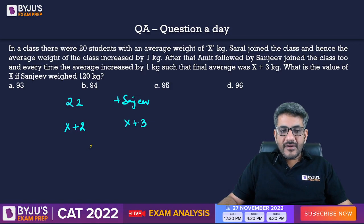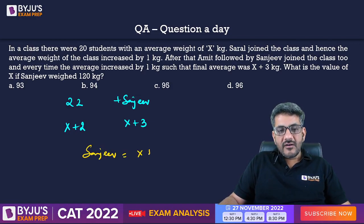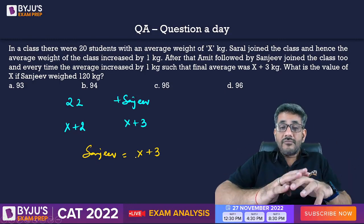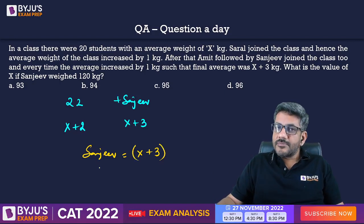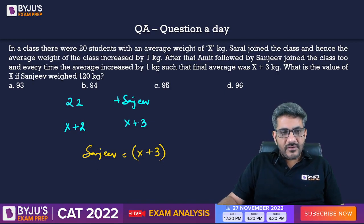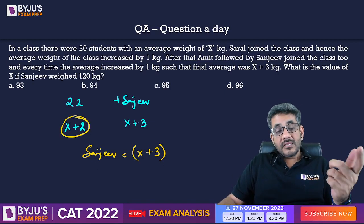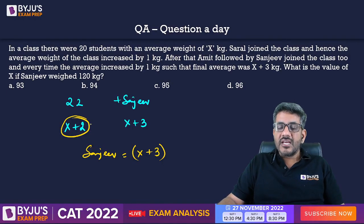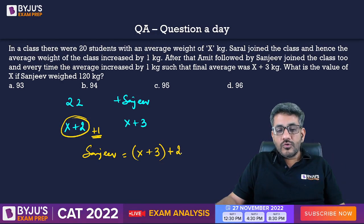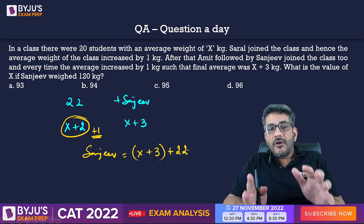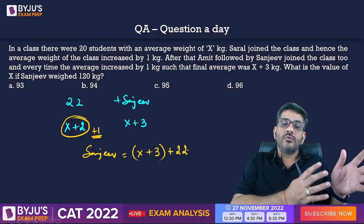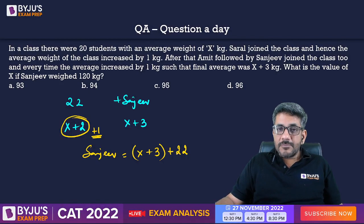The point is, if I talk about Sanjeev, of course, Sanjeev must be having a weight of x plus 3 first of all. Because if in the whole class, the weight of every person is x plus 3, Sanjeev's weight should also be x plus 3. But the remaining 22 people apart from Sanjeev, they were having a weight of x plus 2 each. But their weight also became x plus 3. That means Sanjeev must have increased the weight of each of those guys by 1 kg. That means he increased the weight of those people by 22 kgs. So, not only he brought x plus 3 kg for himself, he also brought 22 kg for those 22 guys as well so that their average also became x plus 3. This x plus 3 plus 22 is equal to 120 kg.